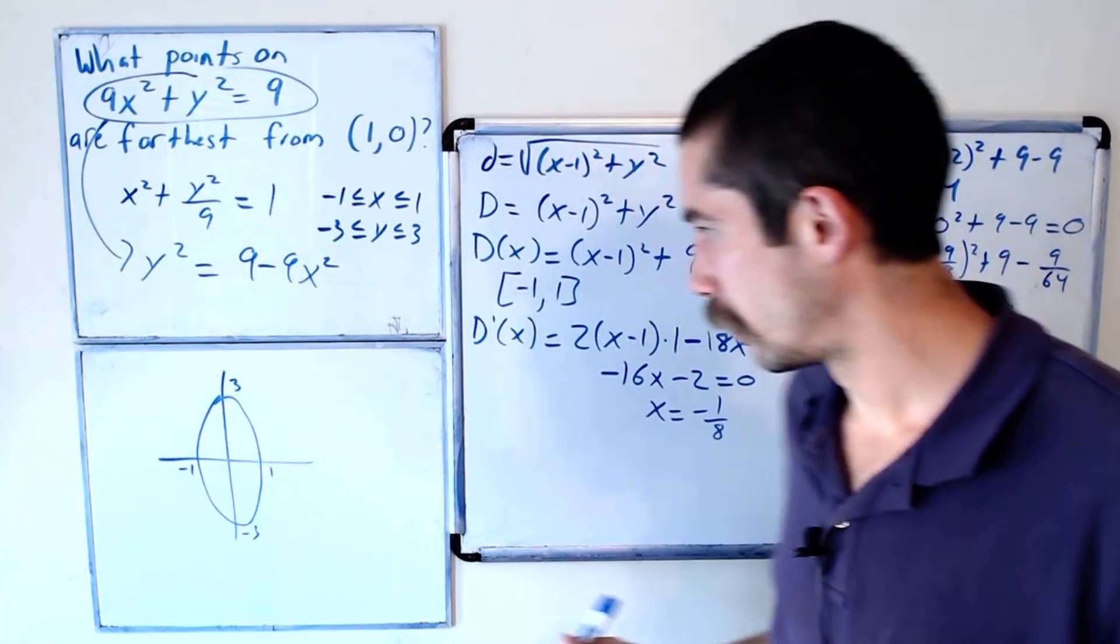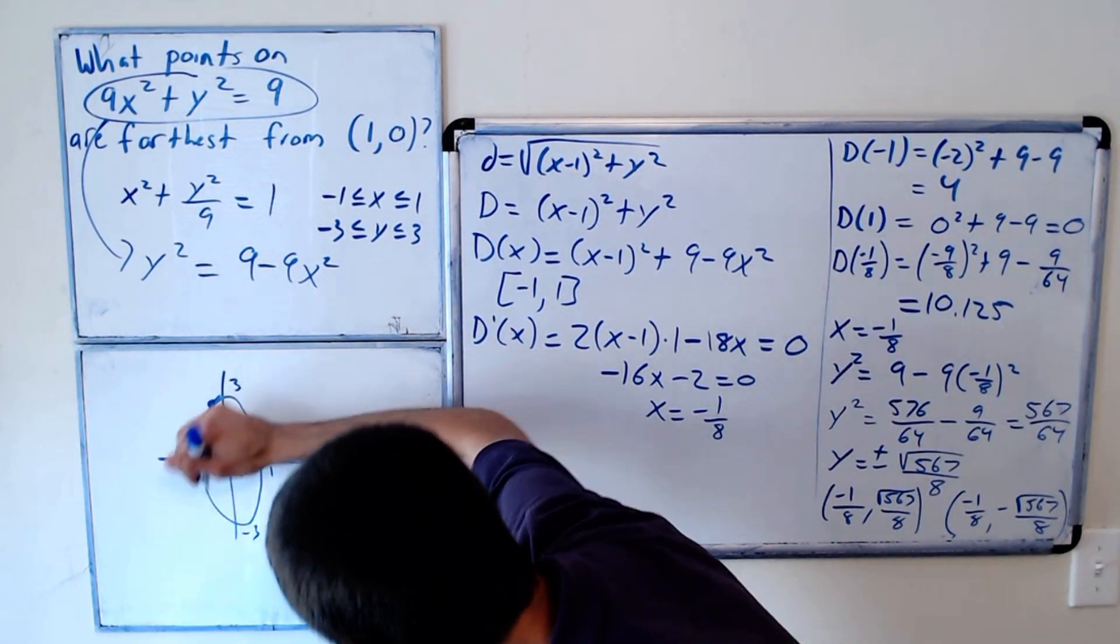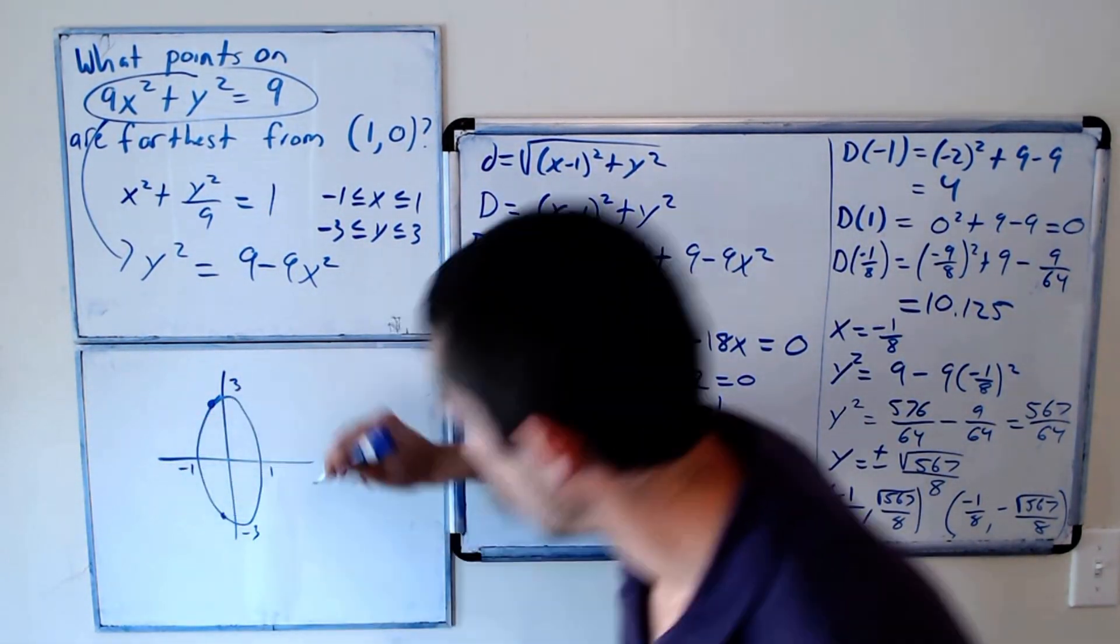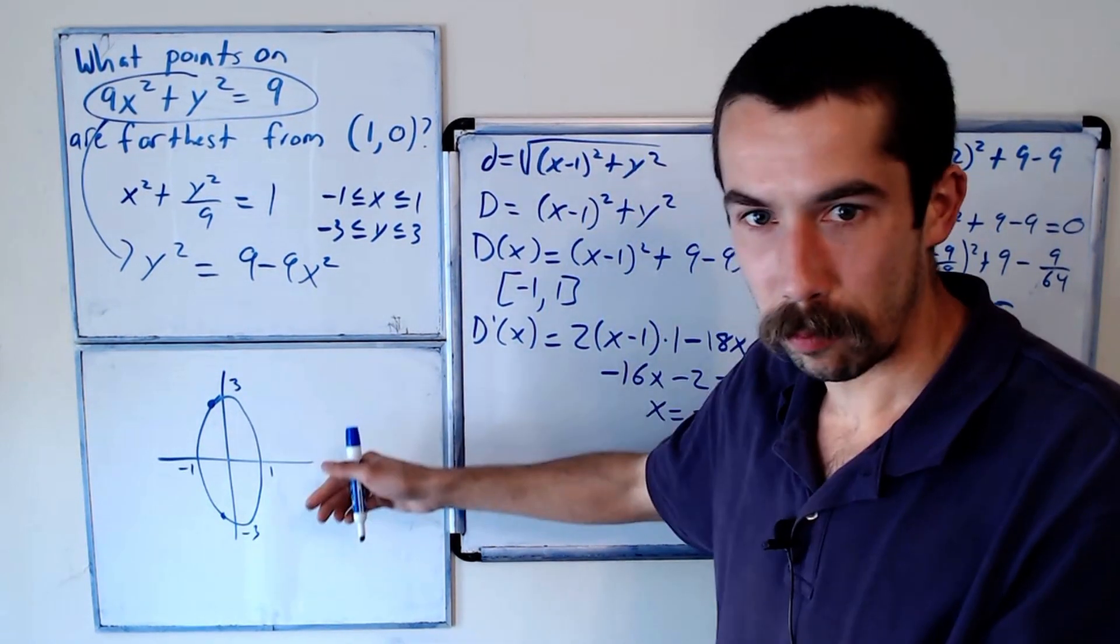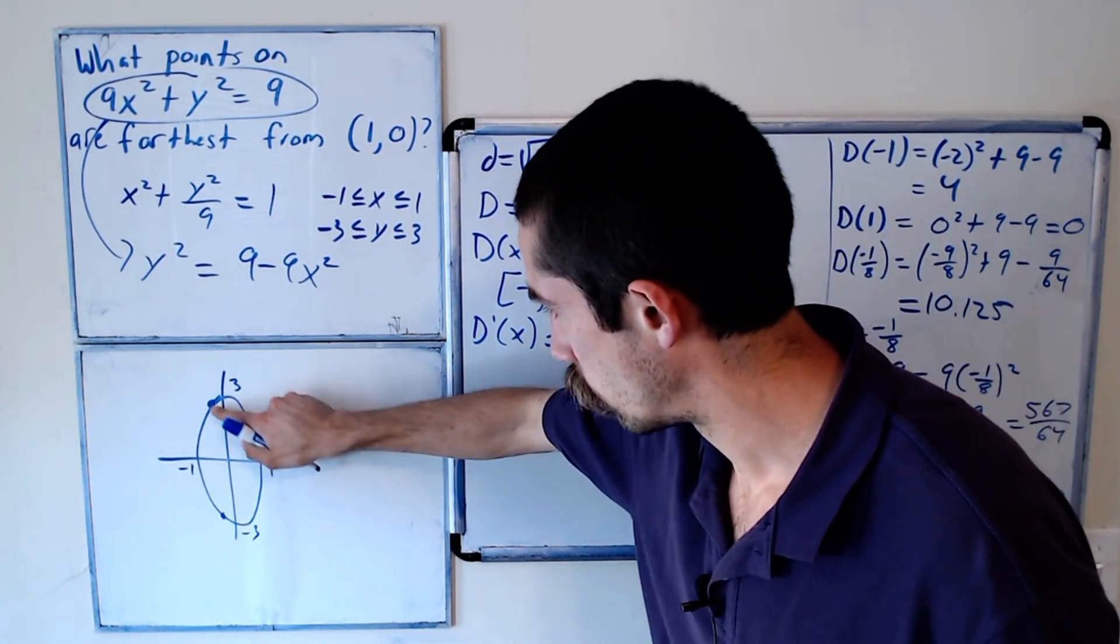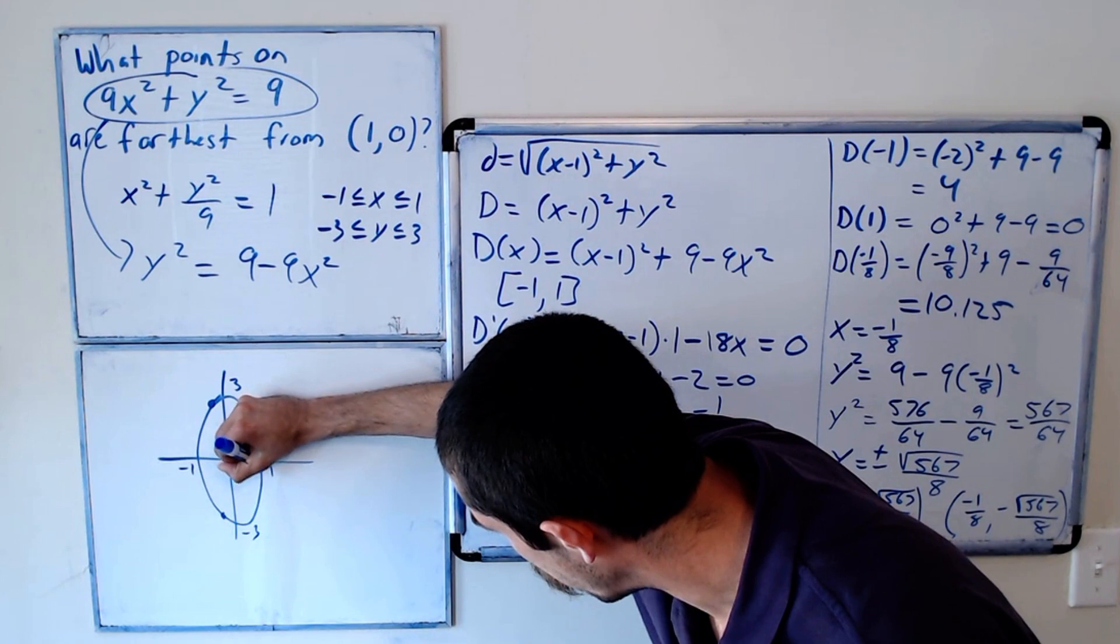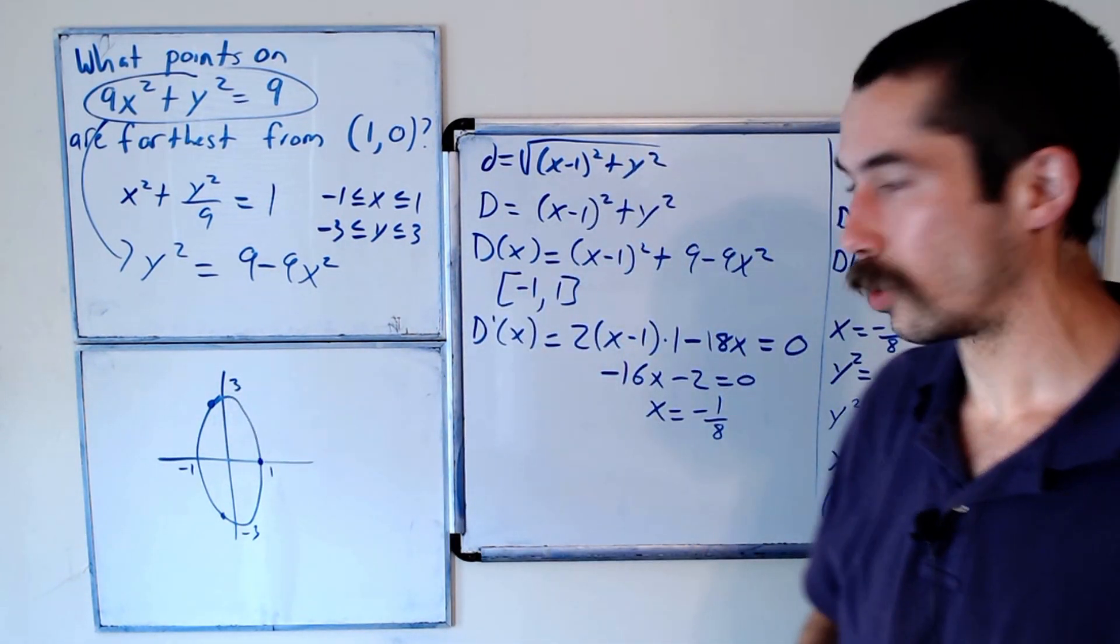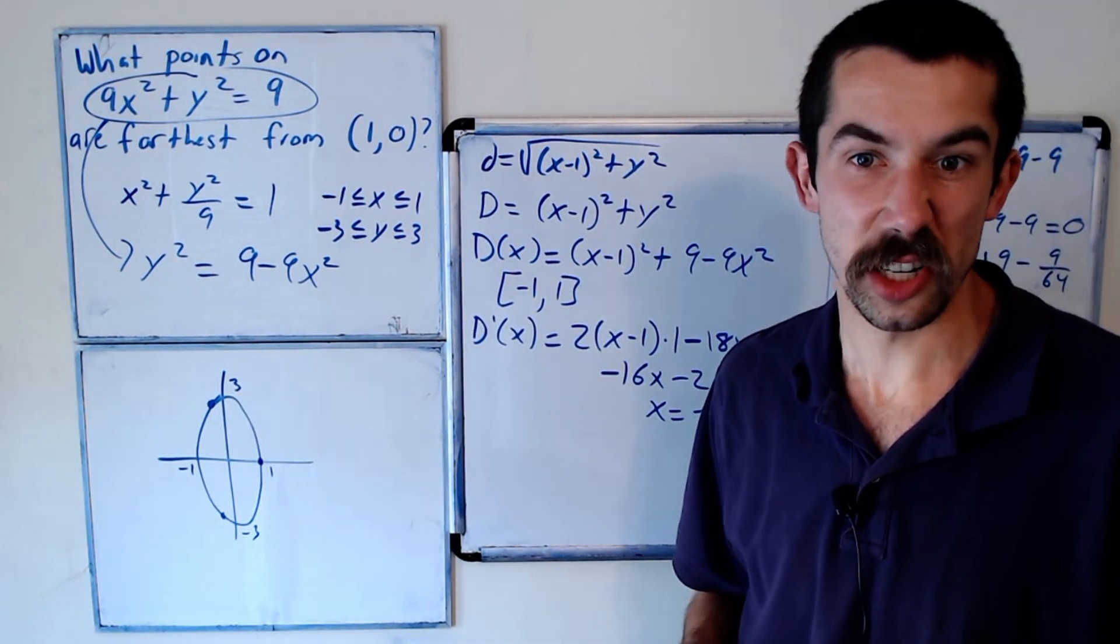And on the graph, they'd be up here and down here. So you can see, I mean, just based on our pretty bad drawing, these points do appear to be pretty far away from the point (1, 0). So it passes the smell test, at least.